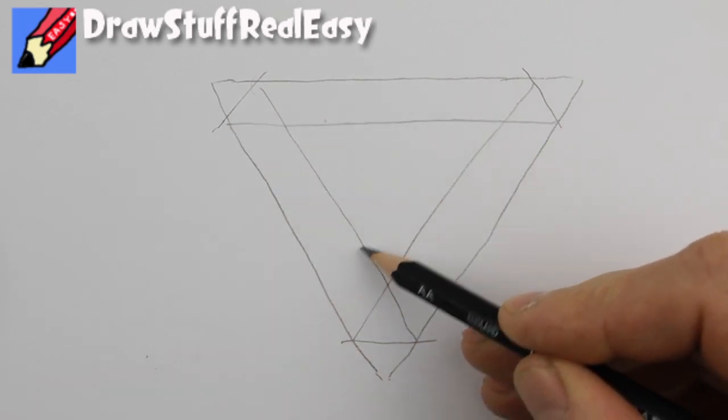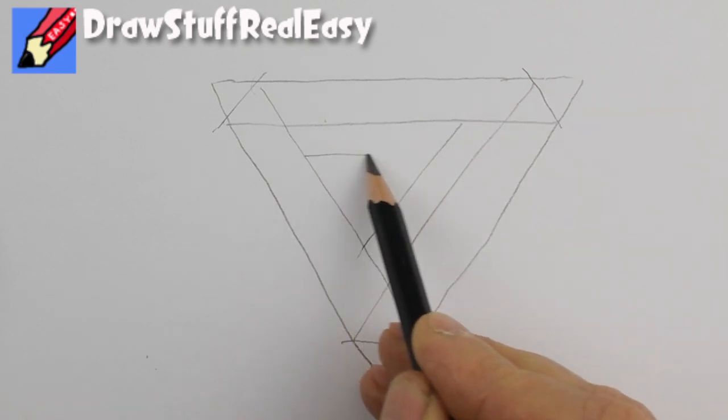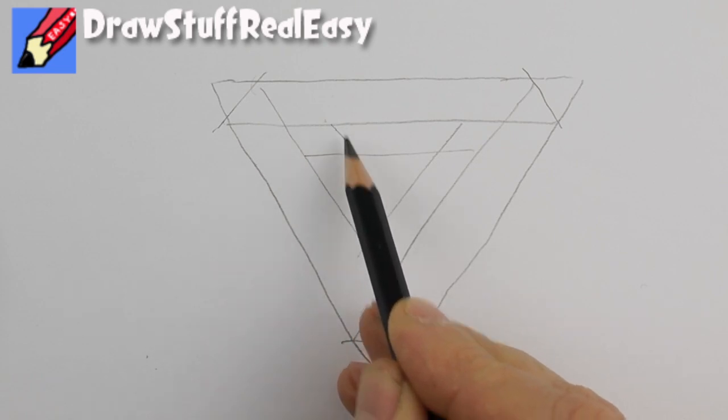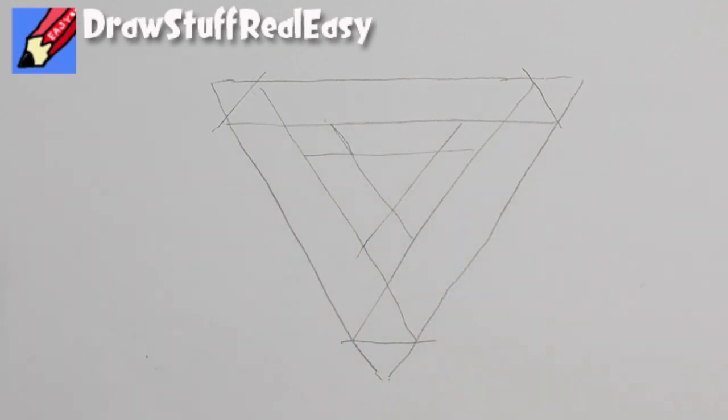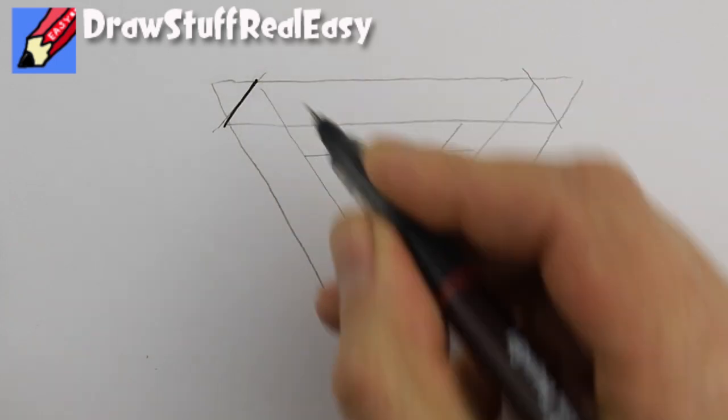Then do a similar thing inside that triangle, so you get a smaller triangle right in the middle. And then go around the outside.